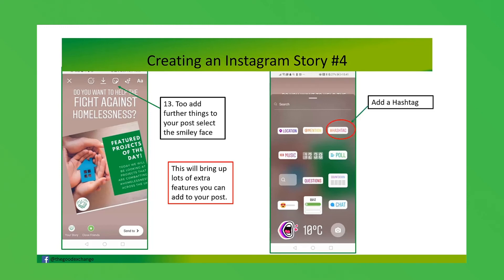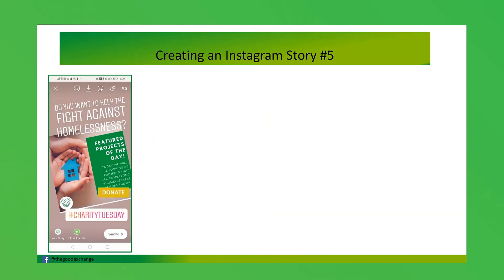You can add hashtags on Instagram Stories — that's quite a relatively new feature. You could also create a poll to ask your users a certain question, similar to what you can do on Facebook, and you can search GIFs.